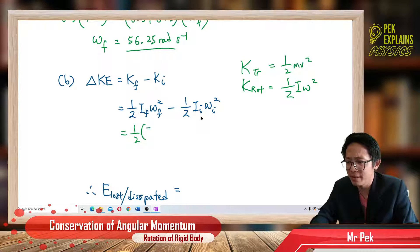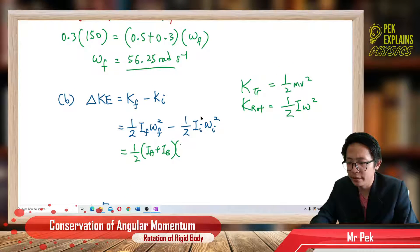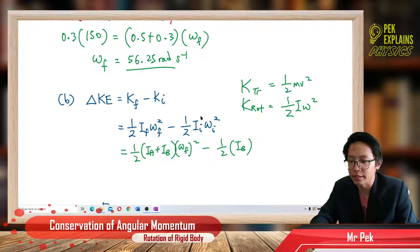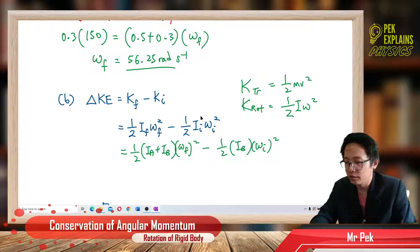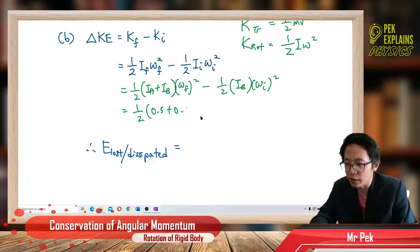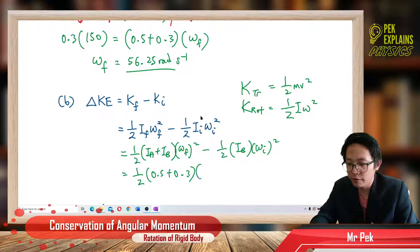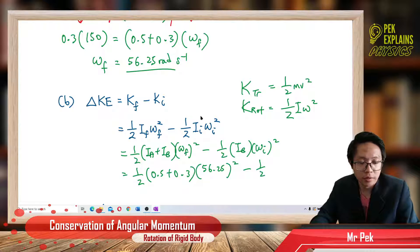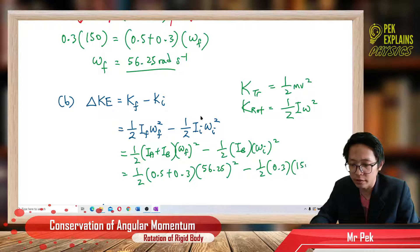For the final state, the combined moment of inertia is IA plus IB — they attach together — and omega final is 56.25, squared. Minus, for the initial state, it's just B rotating, so IB is 0.3, and omega initial is 150, squared.